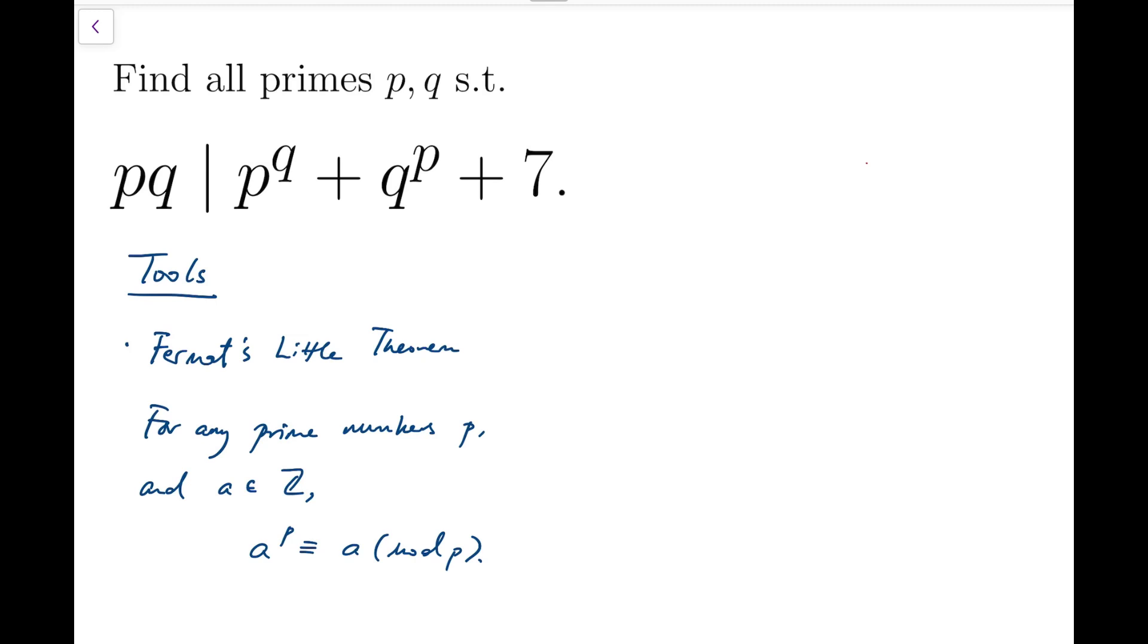let me introduce the most important tool that I'm going to use in this question. This is Fermat's Little Theorem, which says that for any prime number p and any integer a, we have that a to the power p is congruent to a mod p. In other words, a to the p minus a is a multiple of the prime number p.